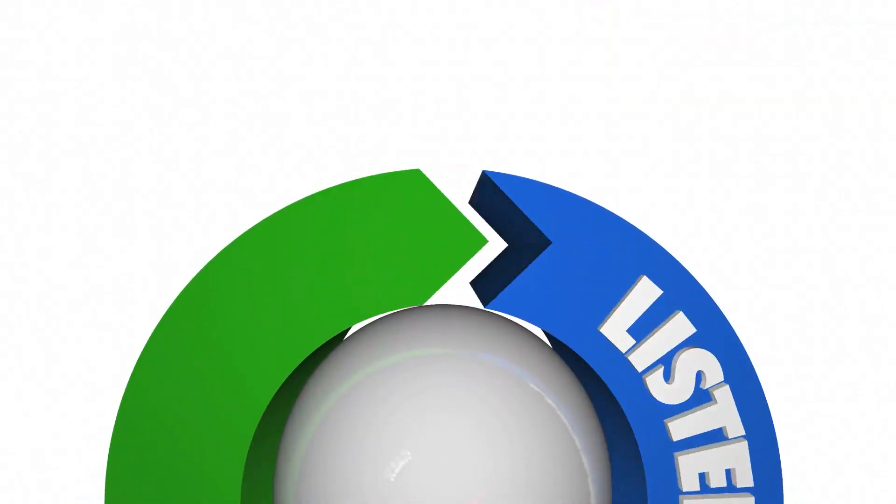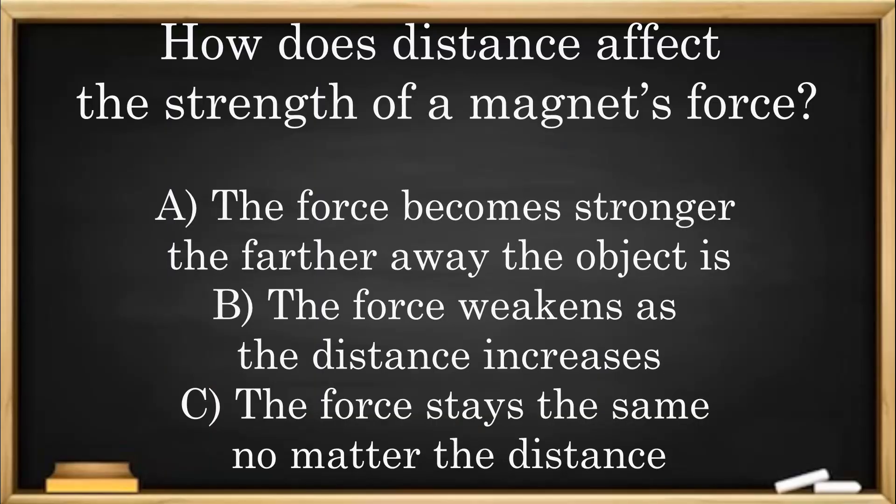Check for understanding. How does distance affect the strength of a magnet's force? A. The force becomes stronger the farther away the object is. B. The force weakens as the distance increases. C. The force stays the same no matter the distance.